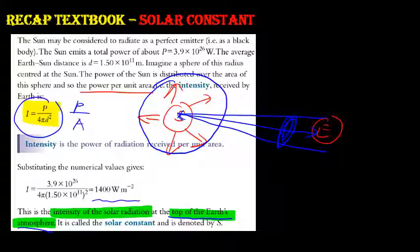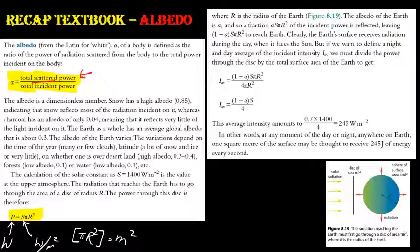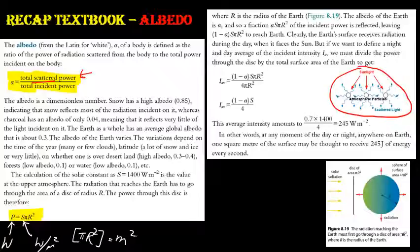Albedo is defined as the ratio of the power of radiation reflected (scattered) to the power of incident radiation. When particles are struck by light, not all energy is reflected — some is absorbed. The fraction reflected in all directions is albedo, denoted α. Note that albedo is dimensionless since it is a ratio.